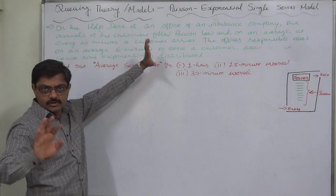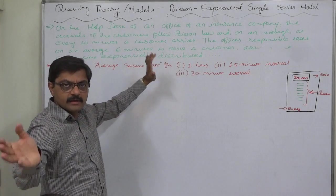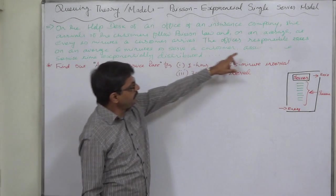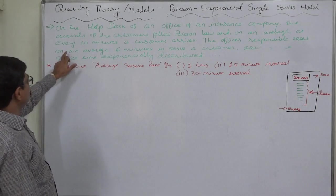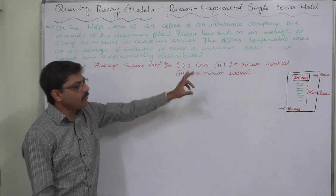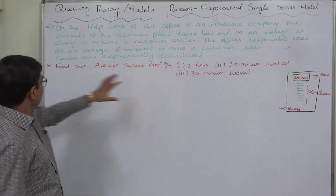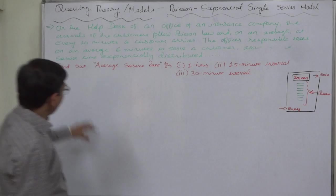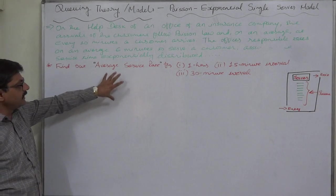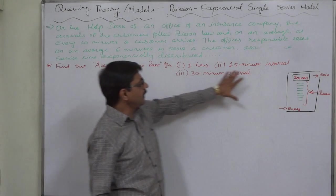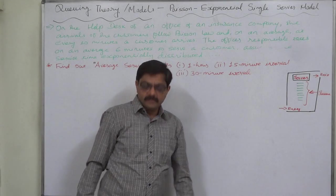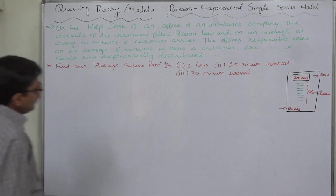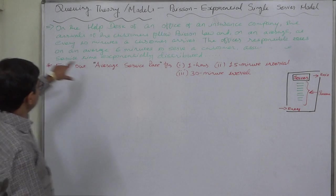On the basis of this we already calculated the arrival rate. The officer responsible takes on average six minutes to serve a customer. Mean service time is exponentially distributed. Now we want to find out average service rate for one hour, 15 minutes interval, and 30 minutes interval.